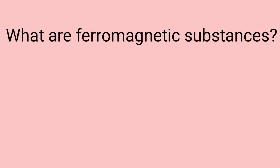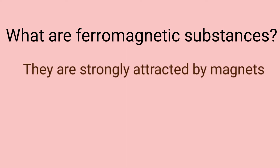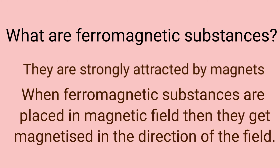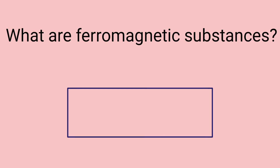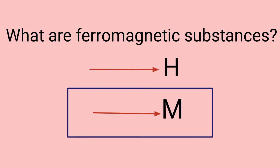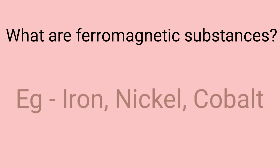What are ferromagnetic substances? These are substances which are strongly attracted by magnets, and when a ferromagnetic substance is placed in a magnetic field, it will get strongly magnetized in the direction of the magnetic field. Examples are iron, nickel, and cobalt.